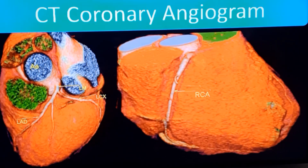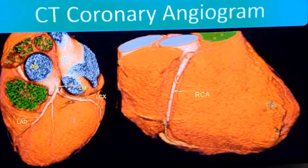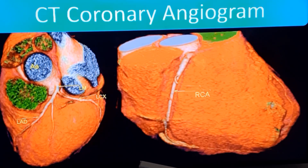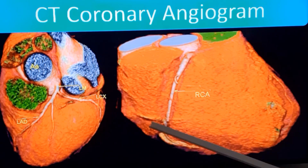You should not be doing CT coronary angiogram for asymptomatic persons just to check whether there are blocks. Because if minor blocks are detected on CT, it will create a lot of anxiety. Only whenever there is a strong possibility that they may have coronary artery disease should it be done. And if there is direct evidence on ECG or the symptom is typical of coronary artery disease, you go for the conventional coronary angiogram.